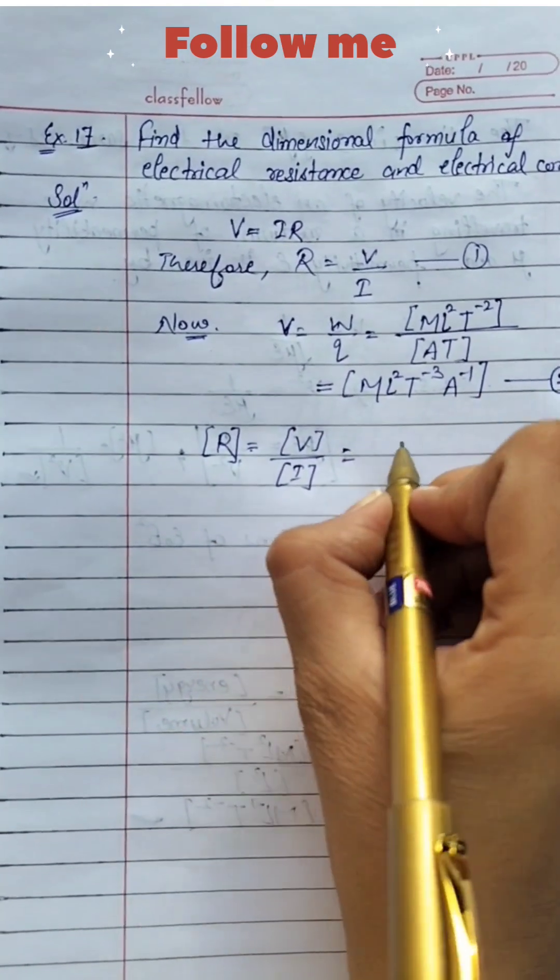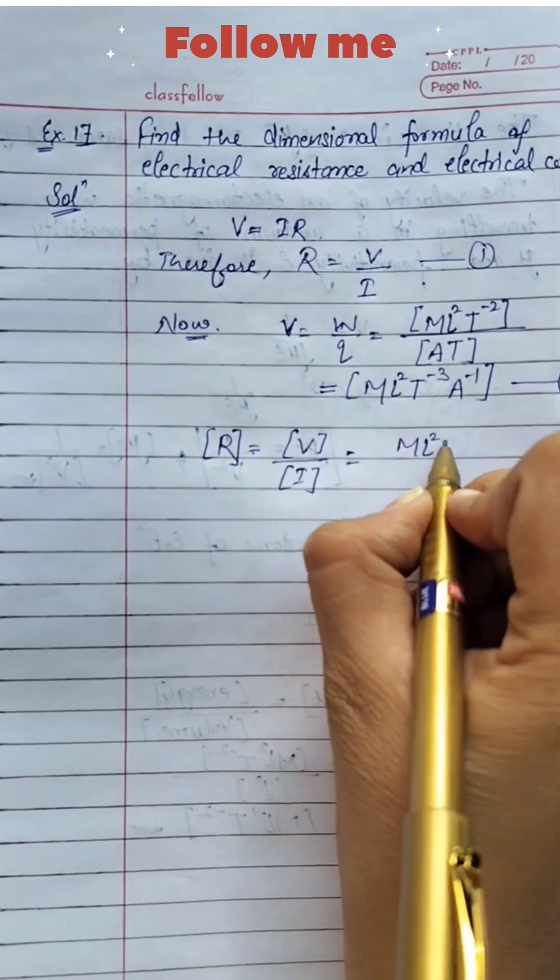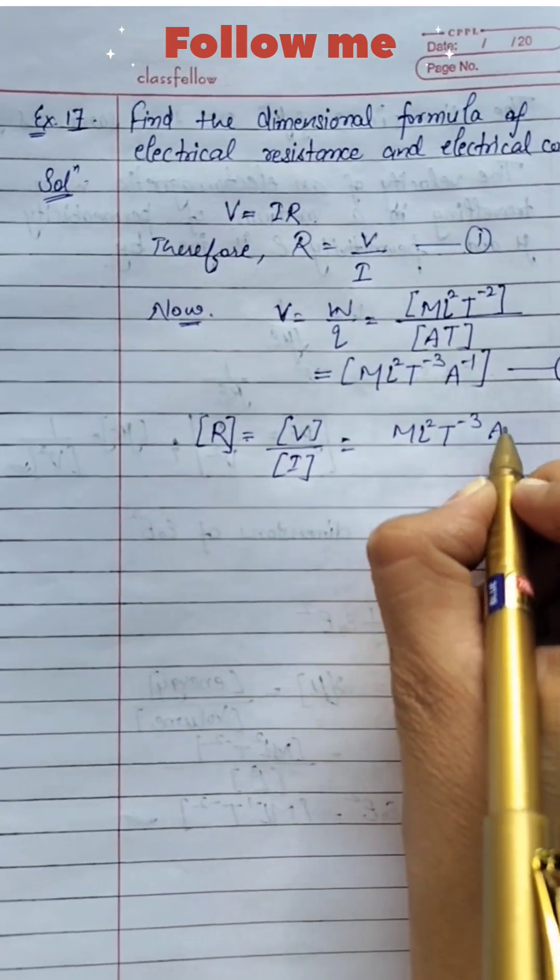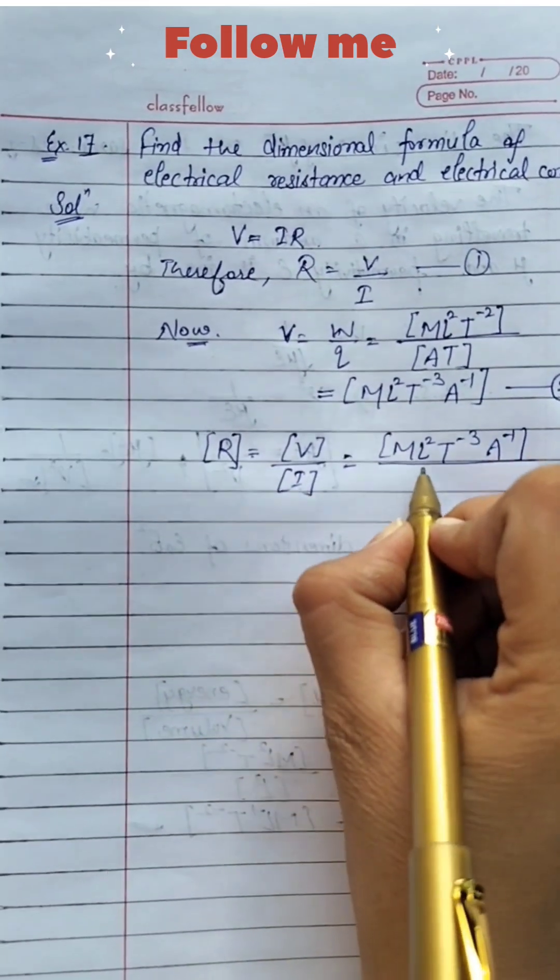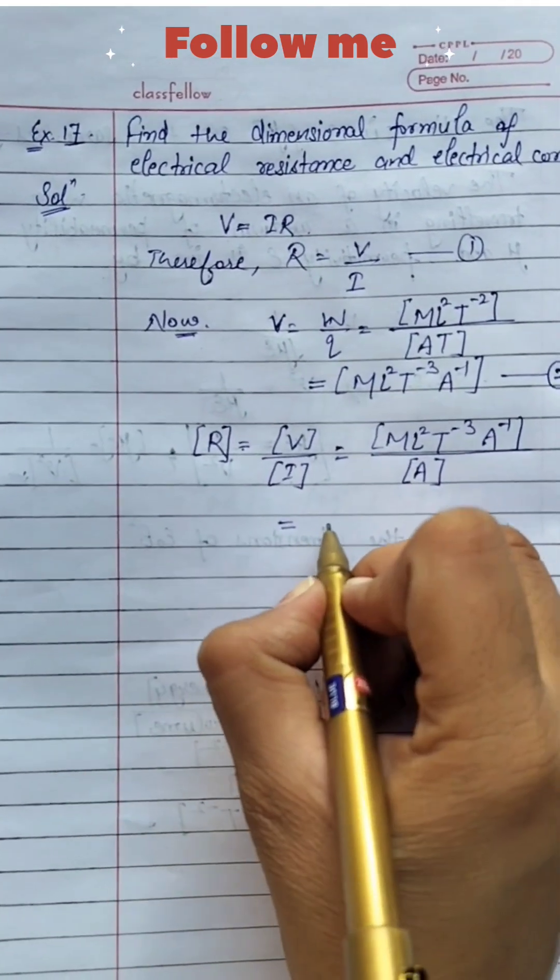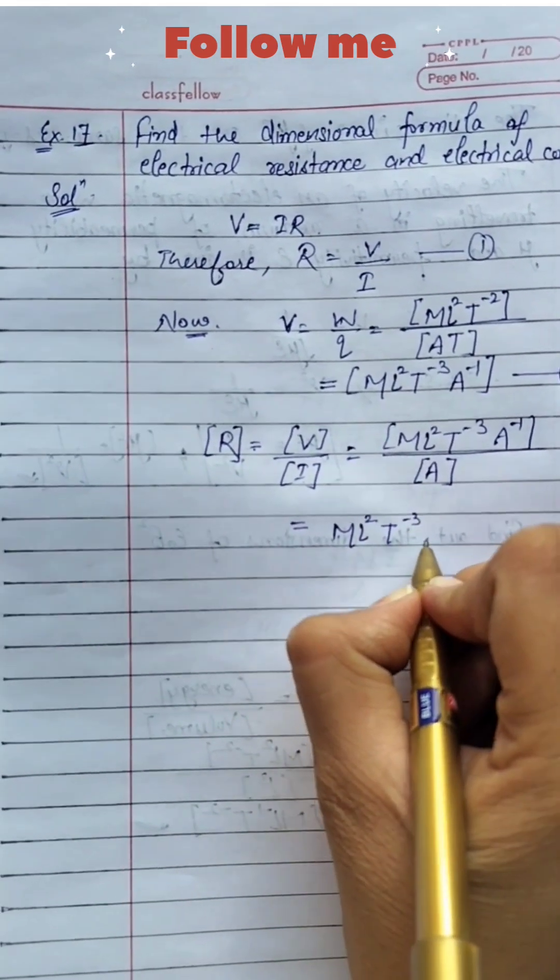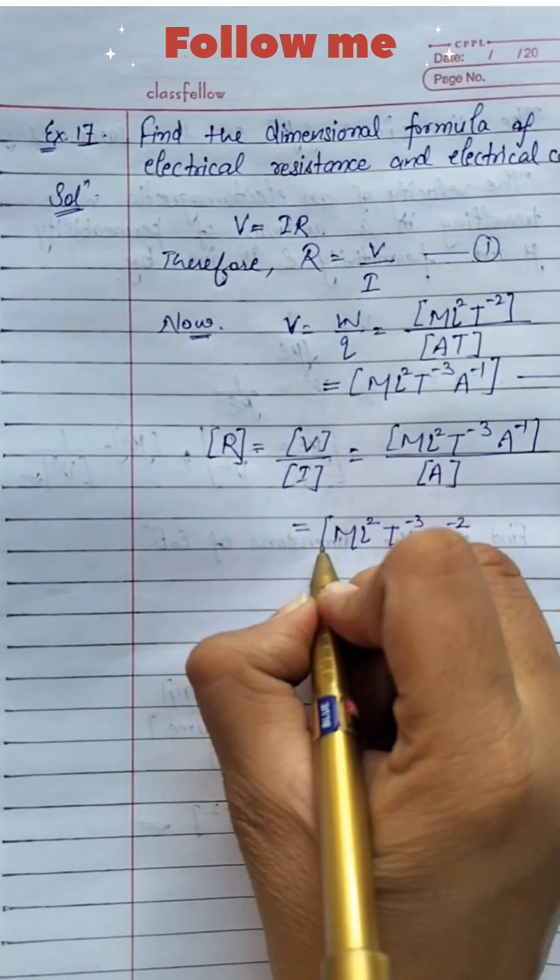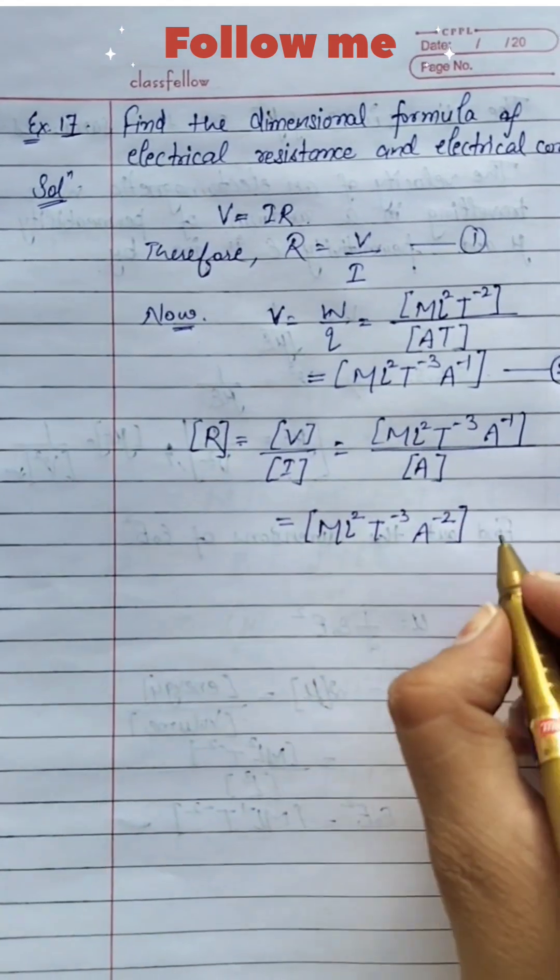That is from equation number 2. V is equal to ML² T⁻³ A⁻¹ upon I, giving the value ampere. So after solving this equation, ML² T⁻³ A⁻². This is the dimensional formula for electrical resistance.